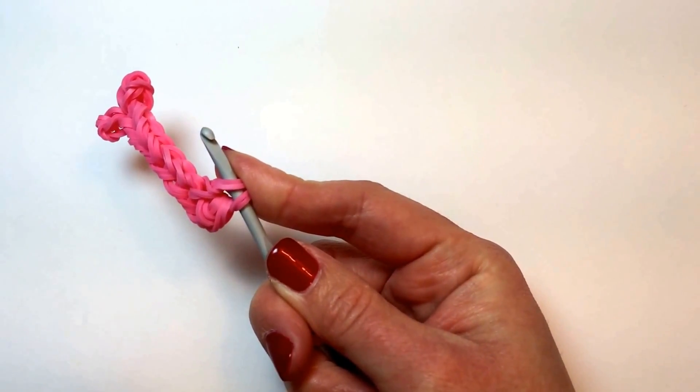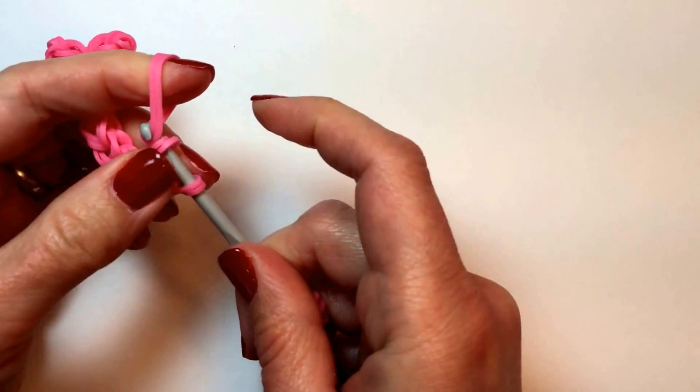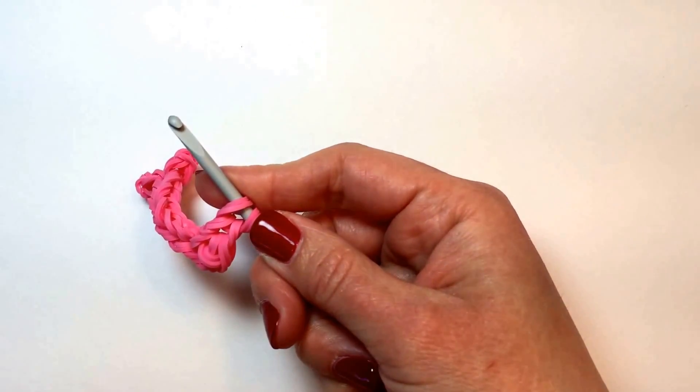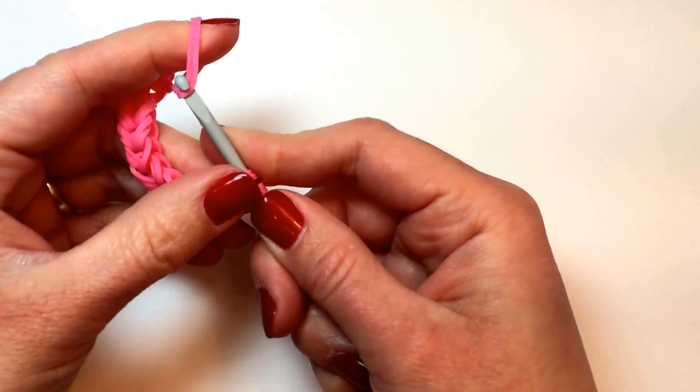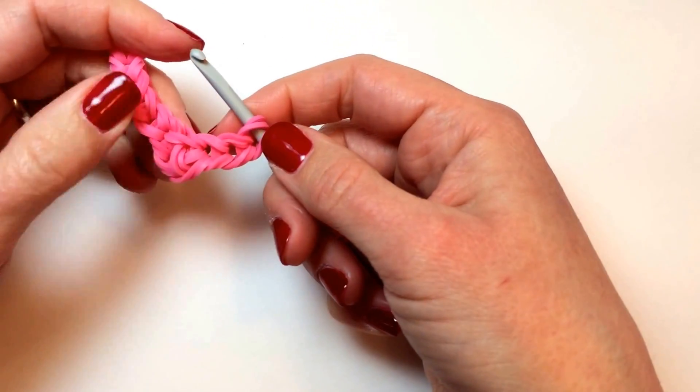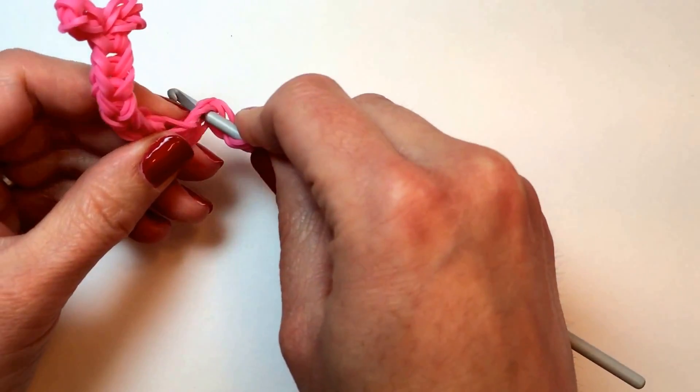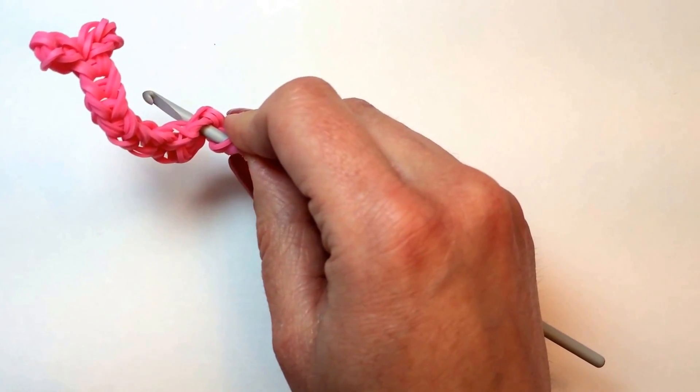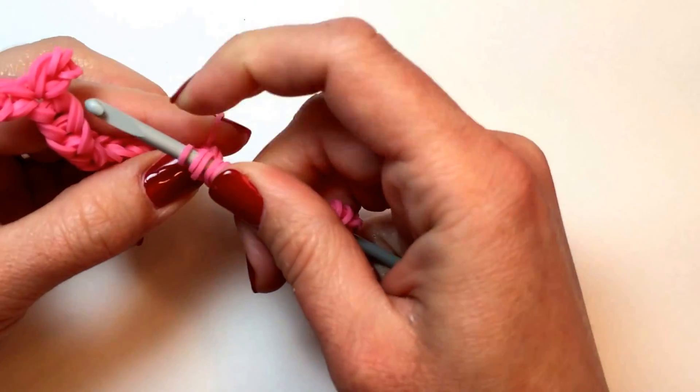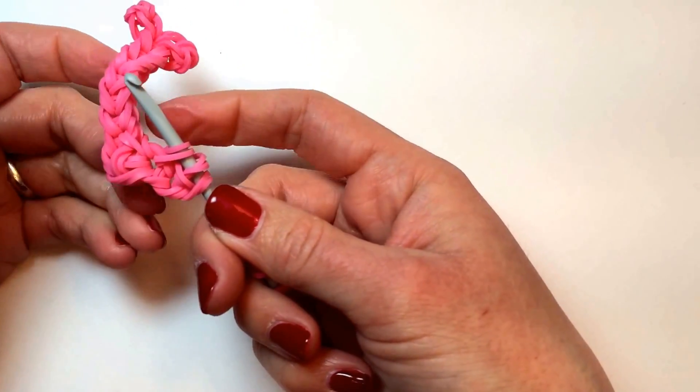And we'll start working up the next side. We need to add two more before we'll connect to create the curve on the other side. Going back in, and we're going to go back in with a single rubber band, bringing it out, back onto our hook like that.